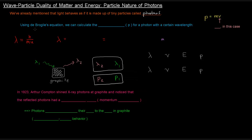What we're going to do is realize that using de Broglie's equation, we can calculate the momentum — represented by P — for a photon with a certain wavelength. Momentum is equal to mass times velocity, and it's a property that is conserved in the same way that energy is conserved. In this case, we're taking V to be the speed of the particle, which we've mentioned was U.